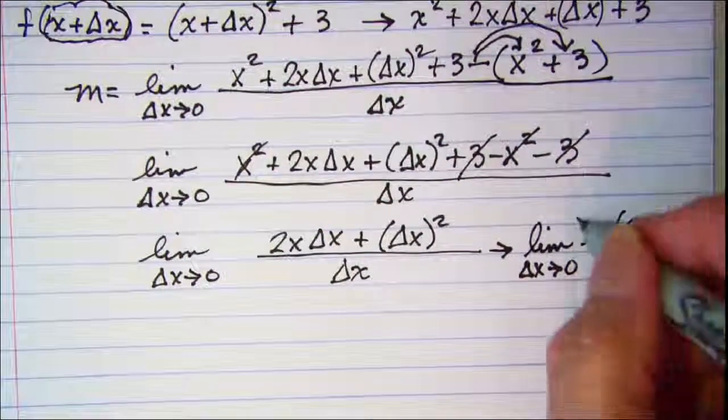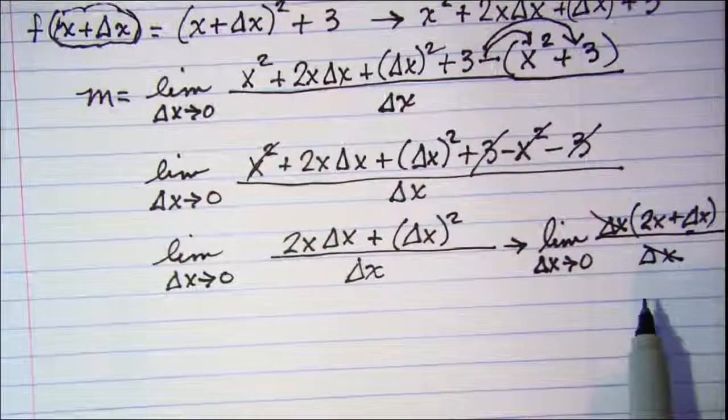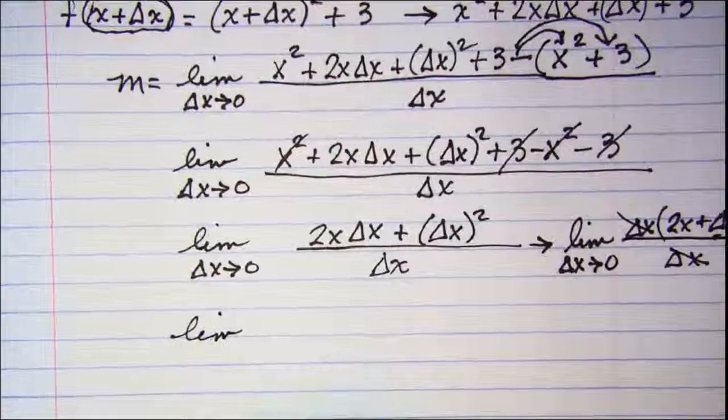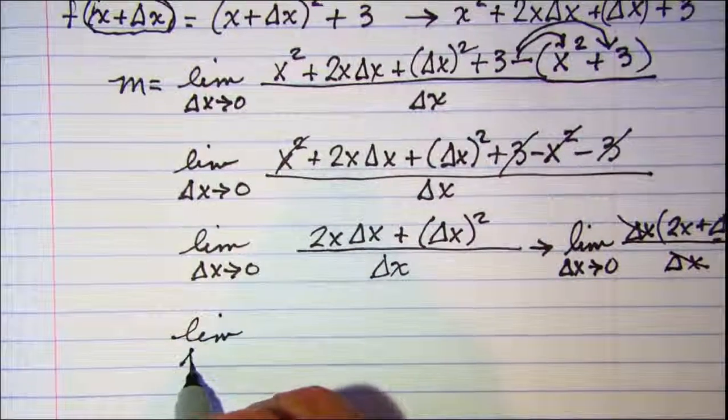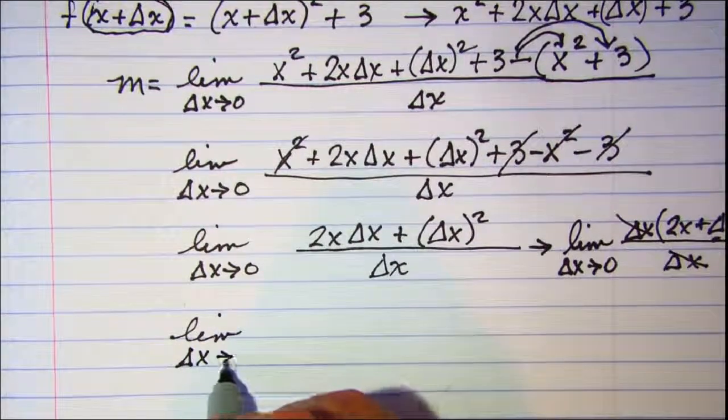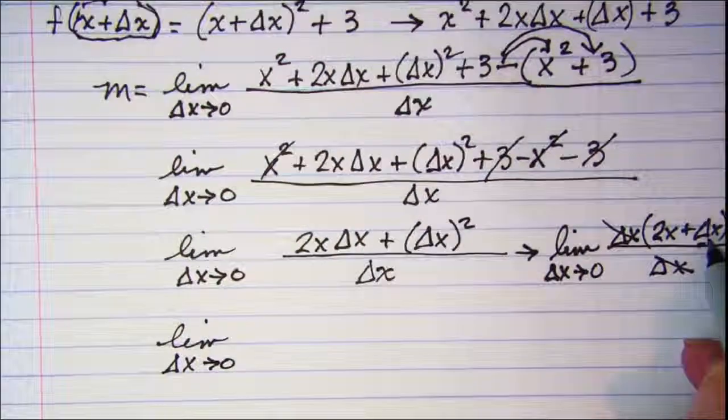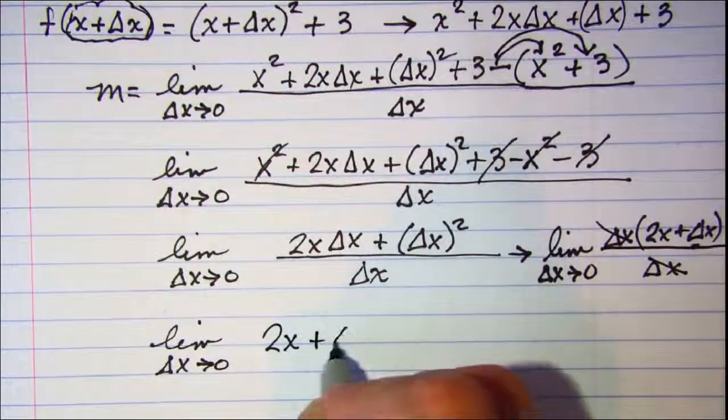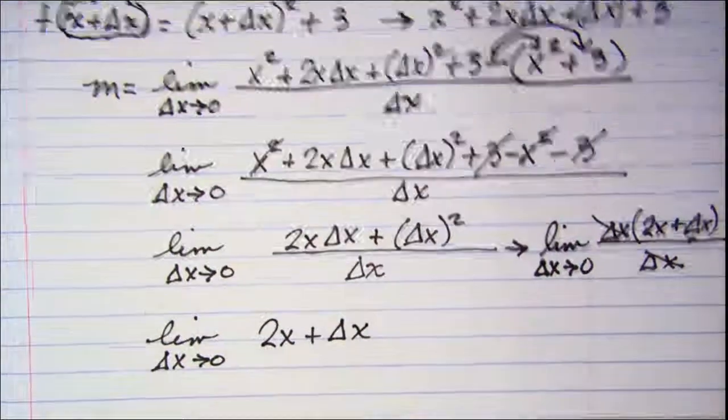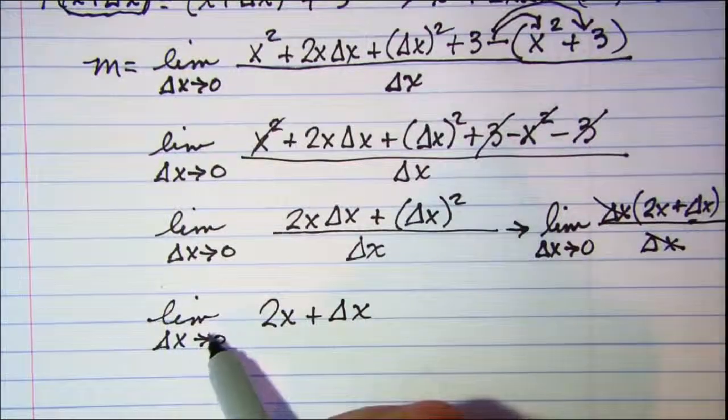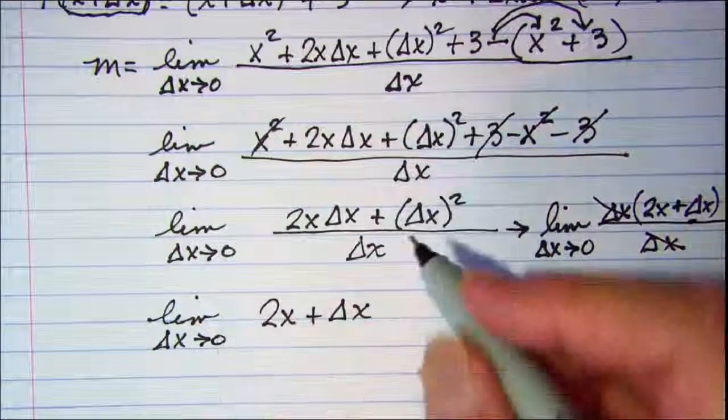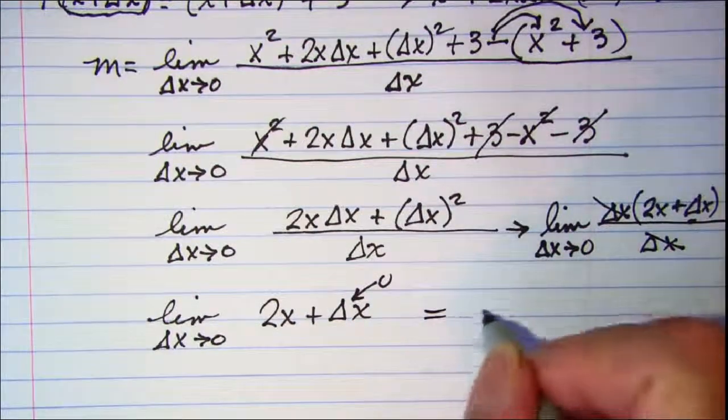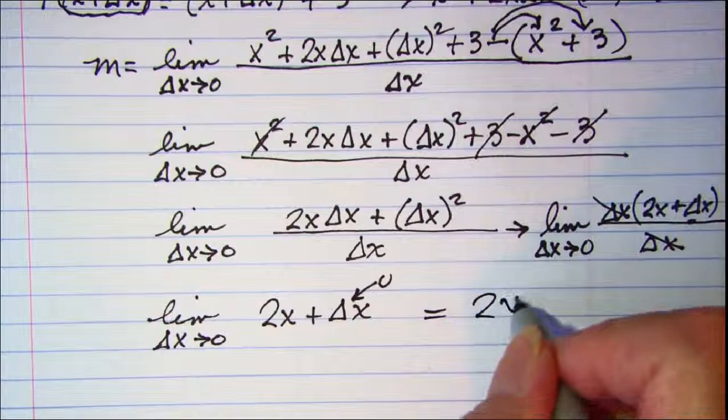Now these guys will cancel which means I can now do direct substitution. I'm doing the limit as Δx approaches zero of 2x + Δx. Well as you take Δx closer and closer to zero this term approaches zero. So that'll be equal then to 2x.